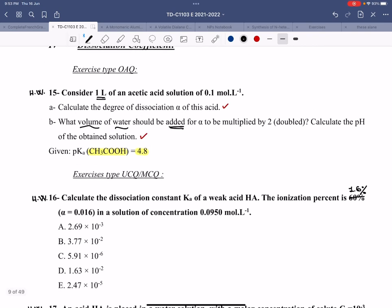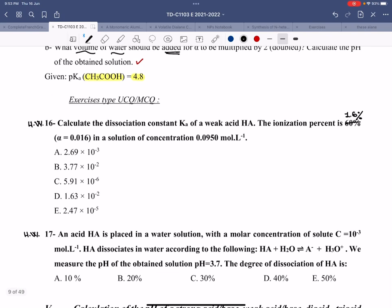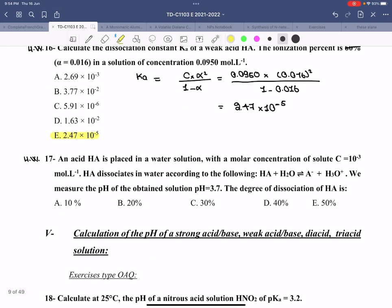Because you solved number 15 and now you know what Ka in terms of alpha is, you don't need to do the ICE table on its own. Now I know that Ka in terms of alpha is equal to C times alpha squared divided by 1 minus alpha. C is basically 0.0950 times alpha squared, which is 0.016 squared, divided by 1 minus 0.016. And you calculate this, which is approximately equal to 2.47 times 10 to the negative 5. And this is it.